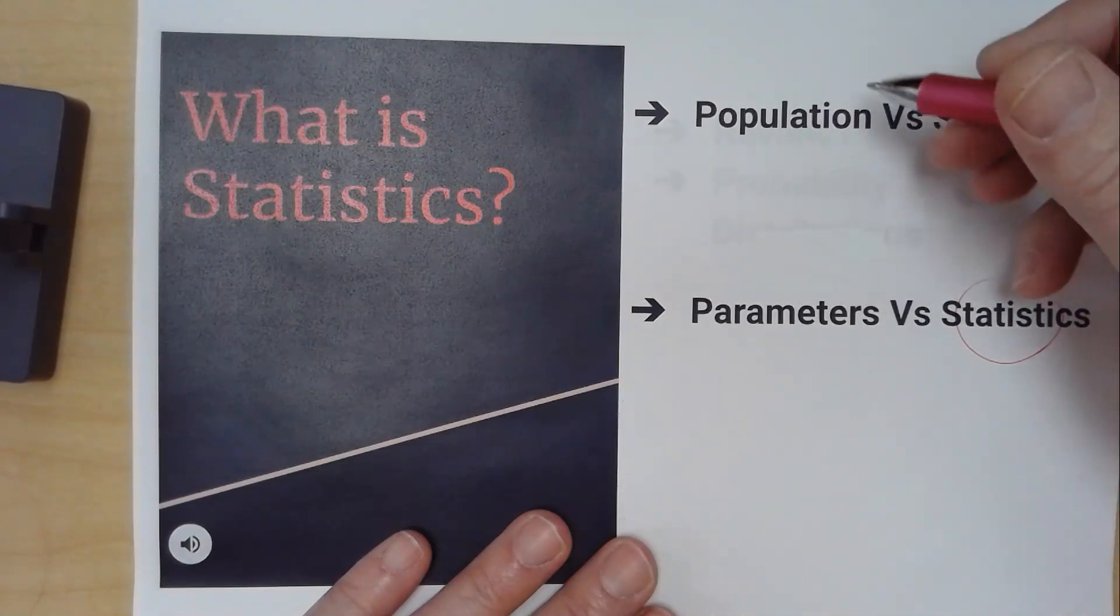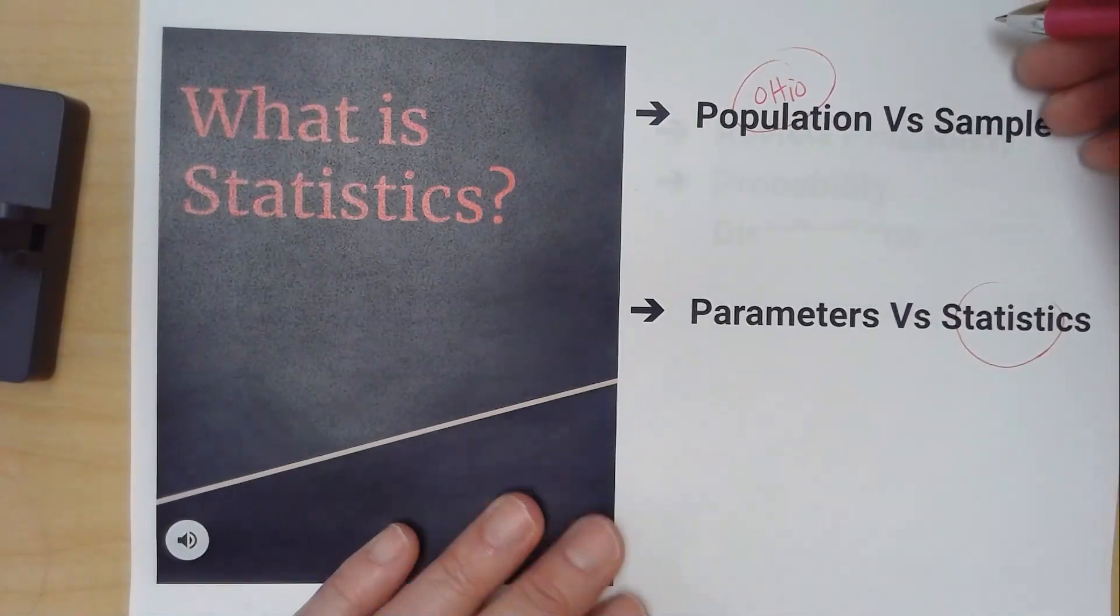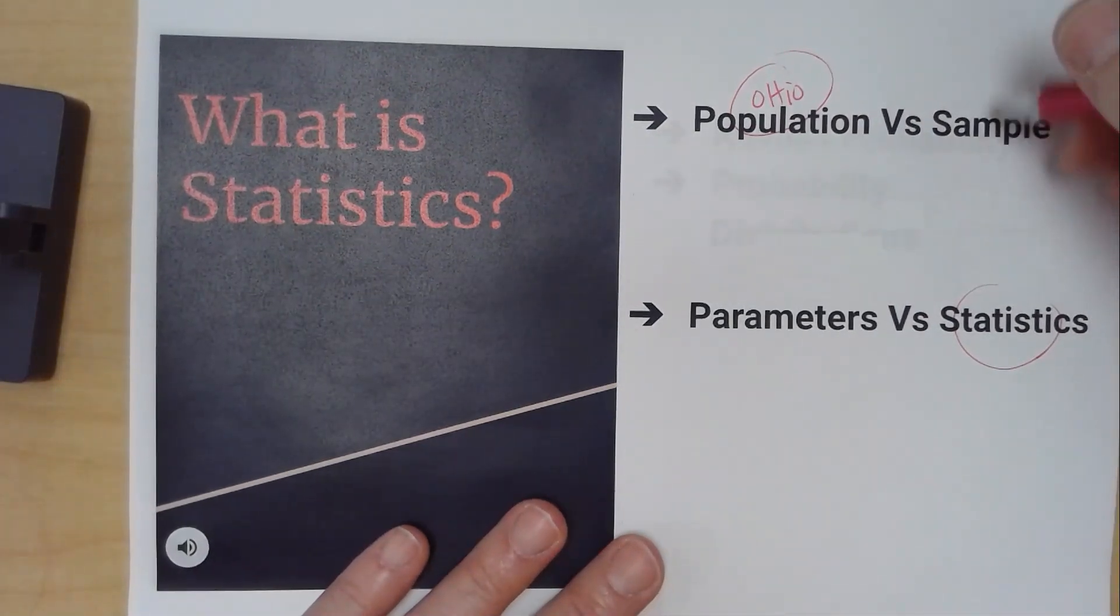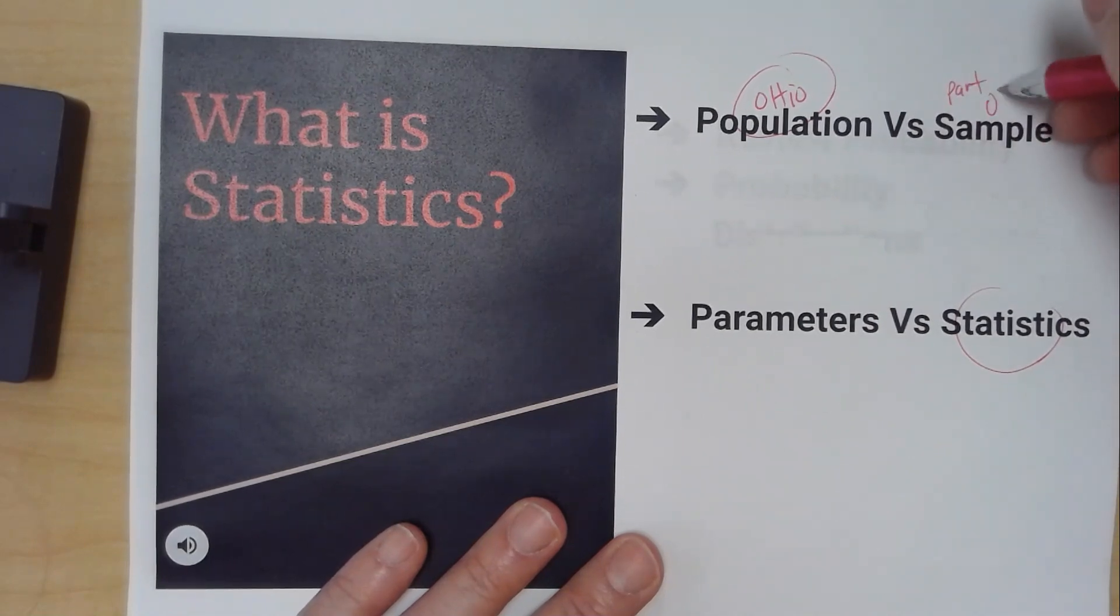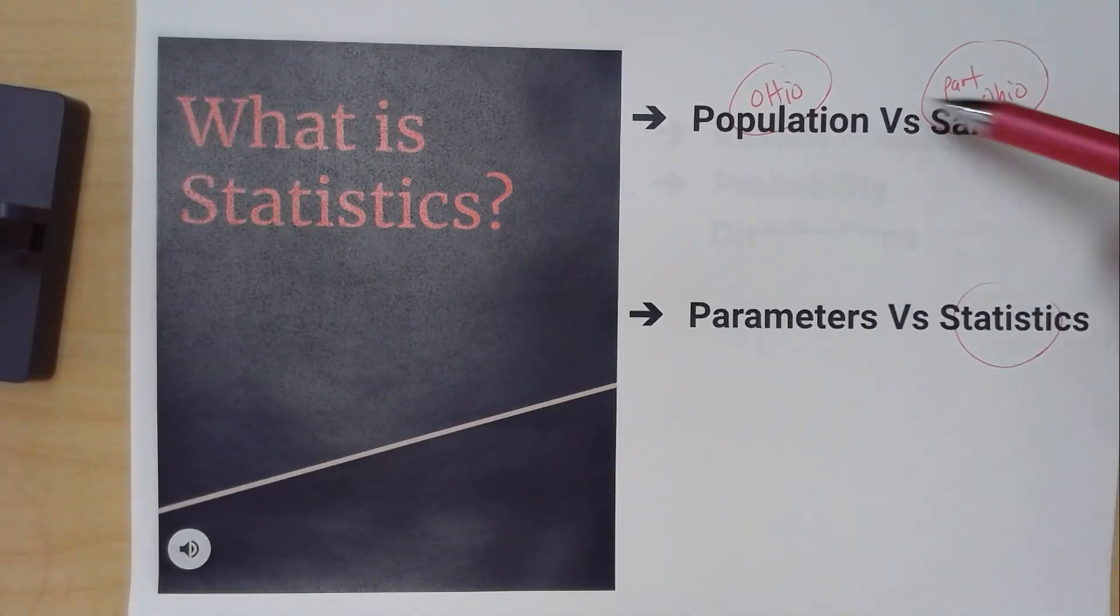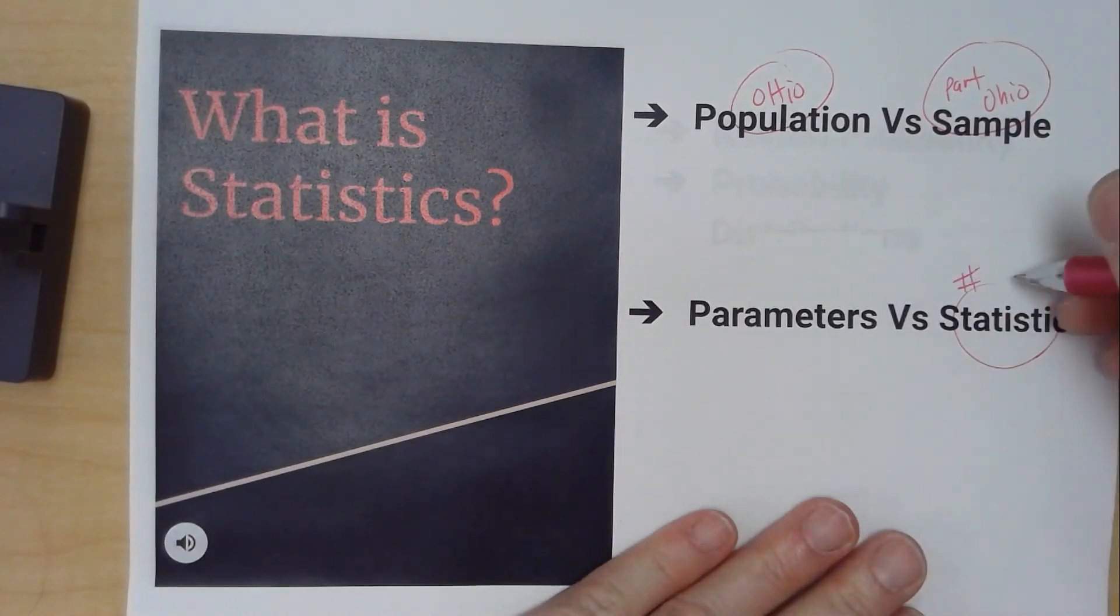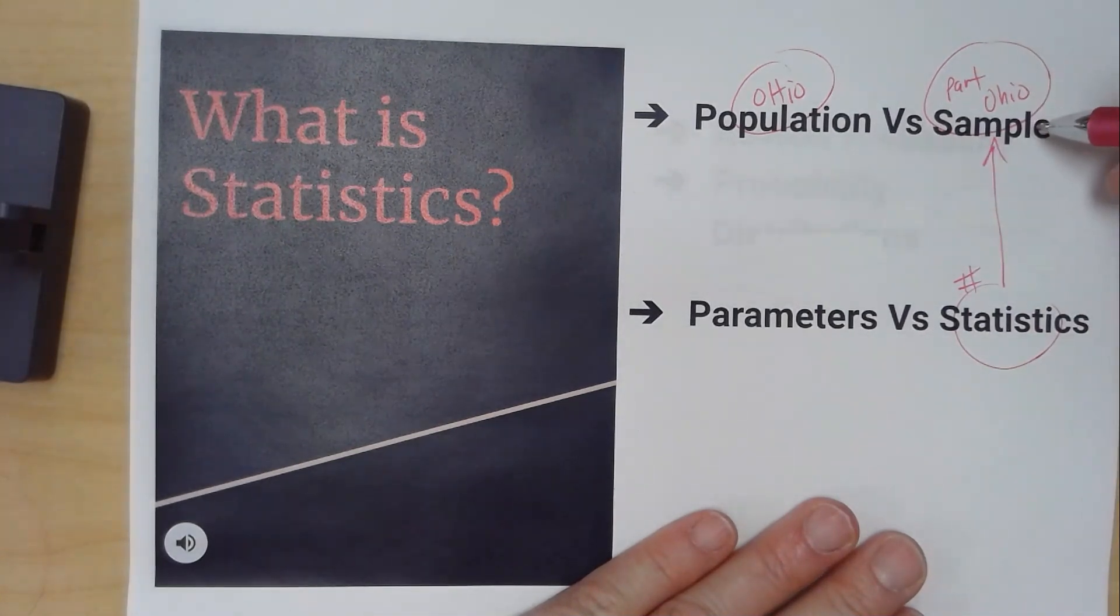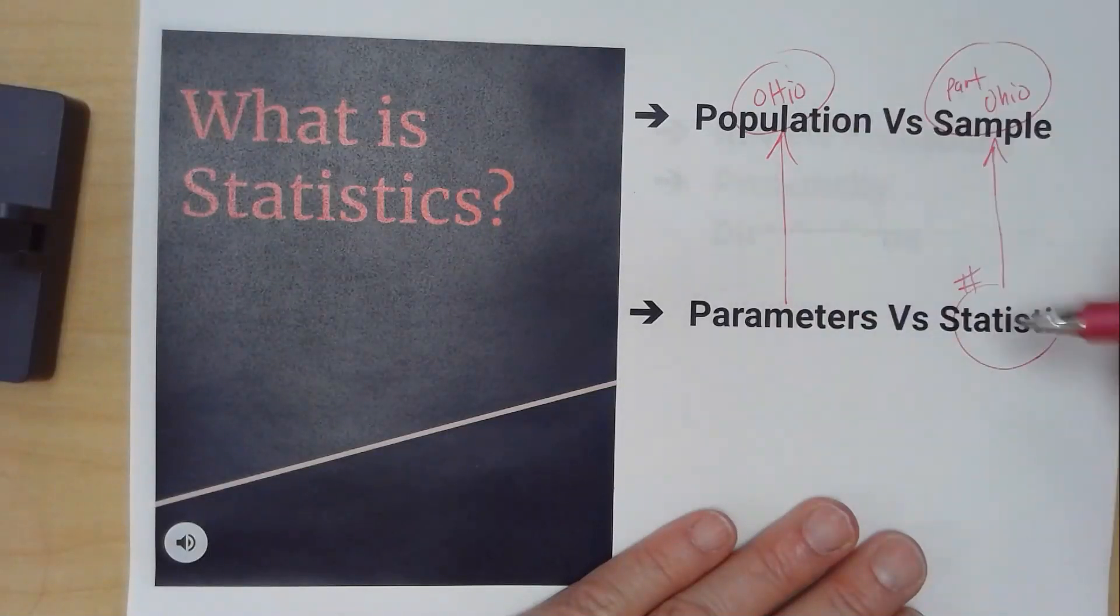Population would be everything like all of Ohio. And if I want to know information about all of Ohio, I've got to take a sample. So a sample is part of Ohio. If I want to know about voting or something like that, it's hard to talk to every voter in Ohio. So I just take part of the people of Ohio and I ask them a question like, who are you voting for? So a statistic is a number that's related to the part of Ohio. Parameters are numbers that are related to all of Ohio.